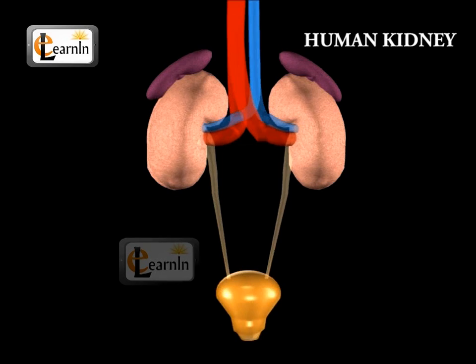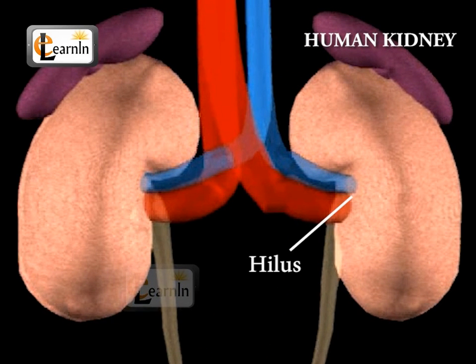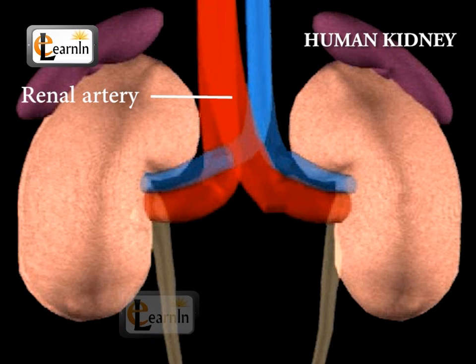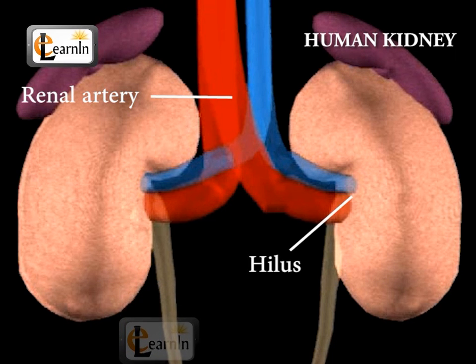The notch present in the inner margin is called the hilus. The renal artery, which brings blood to the kidney from the heart, enters the kidney through the hilus.